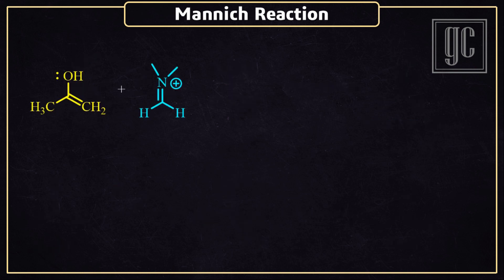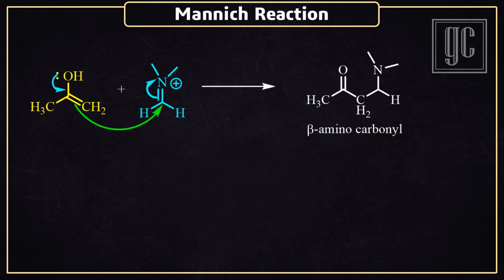The third step is the reaction between enols and iminium ions. In the enols, the lone pairs of the oxygen come down and form a double bond between carbon and oxygen. Due to this, the pi-electrons of the carbon-carbon double bond attack on the carbon of the iminium ion, and the final product — beta-amino ketones — are formed.